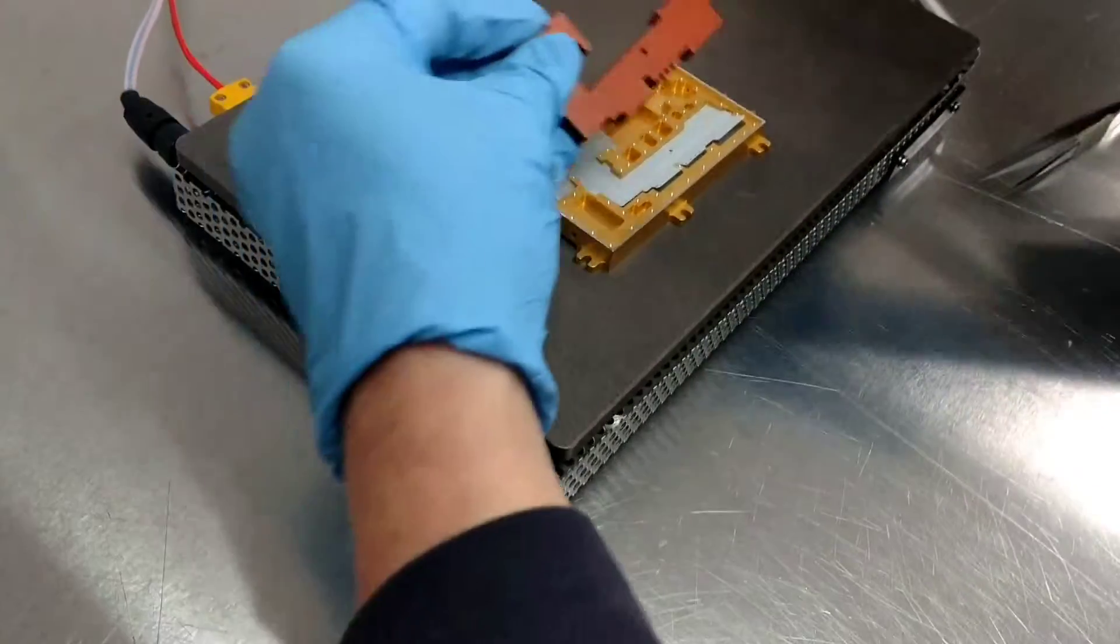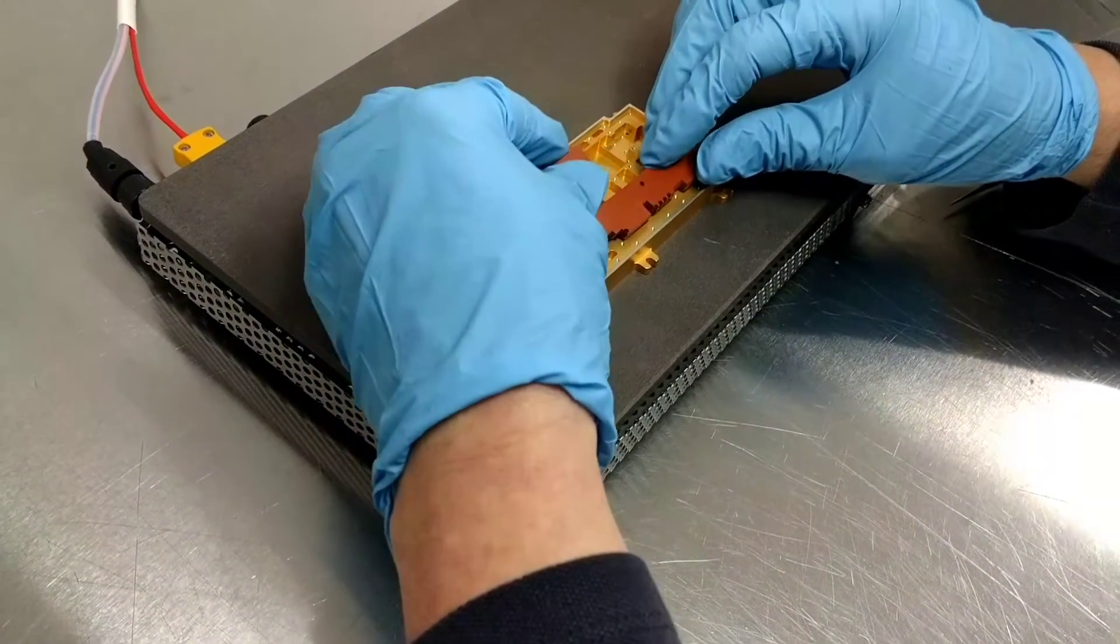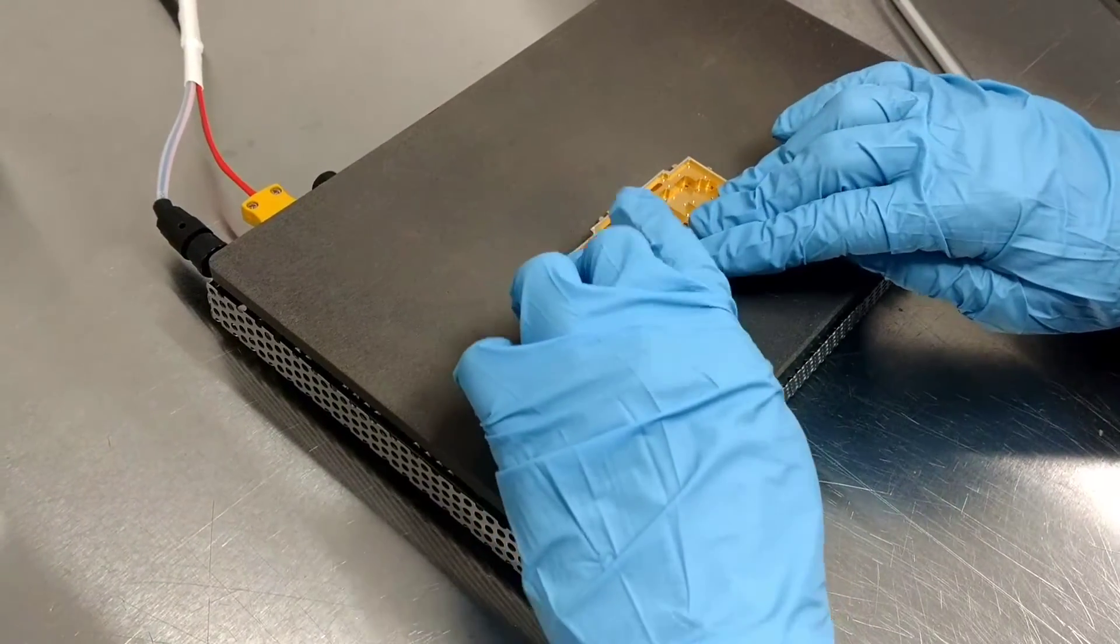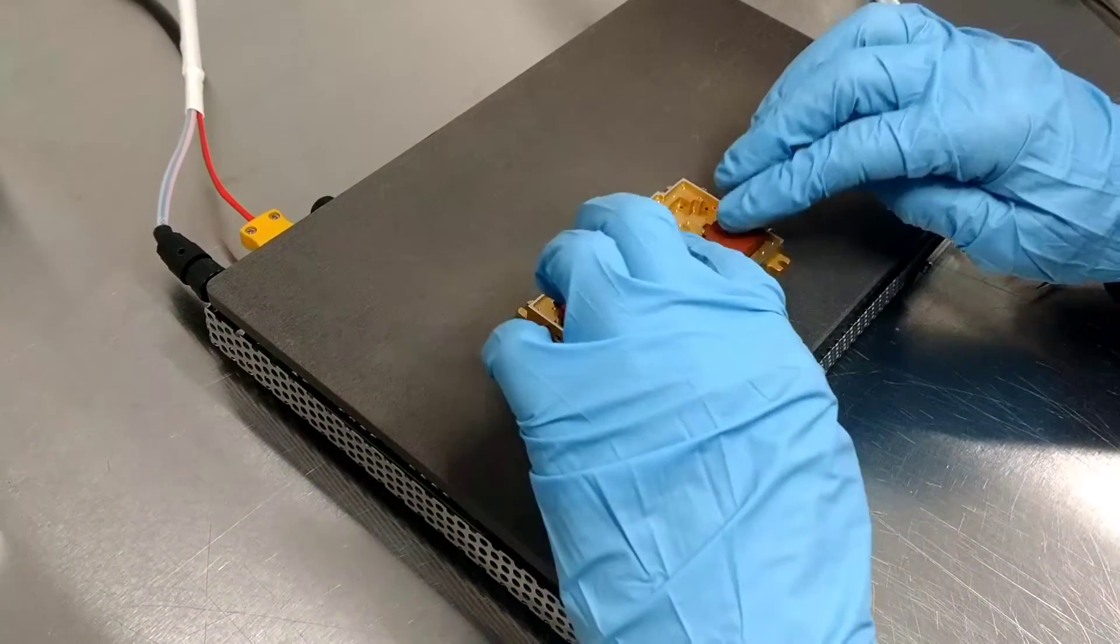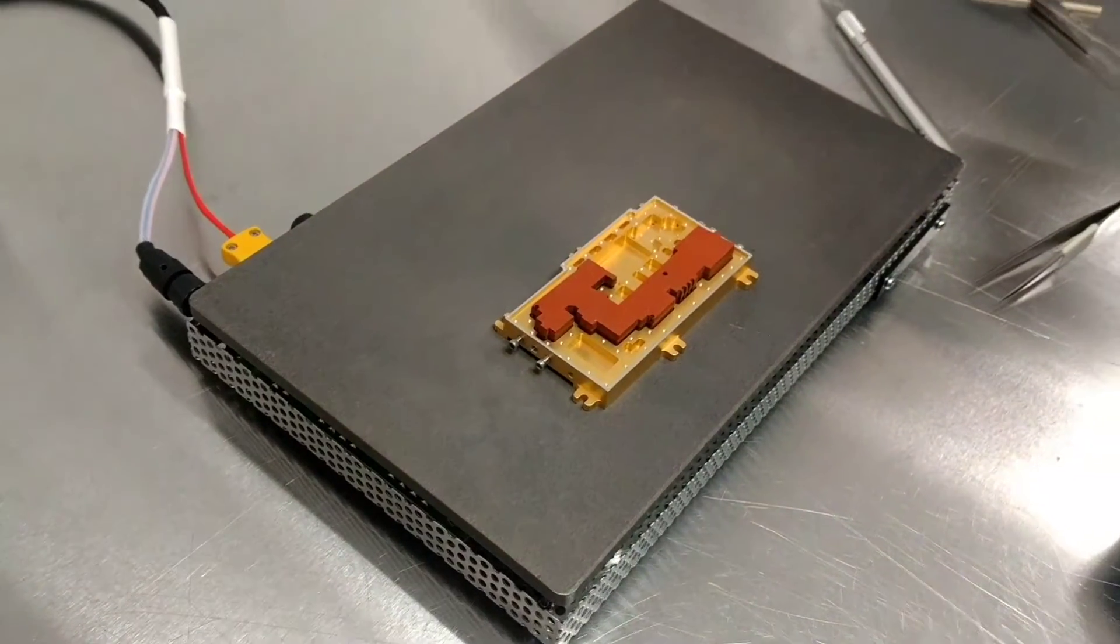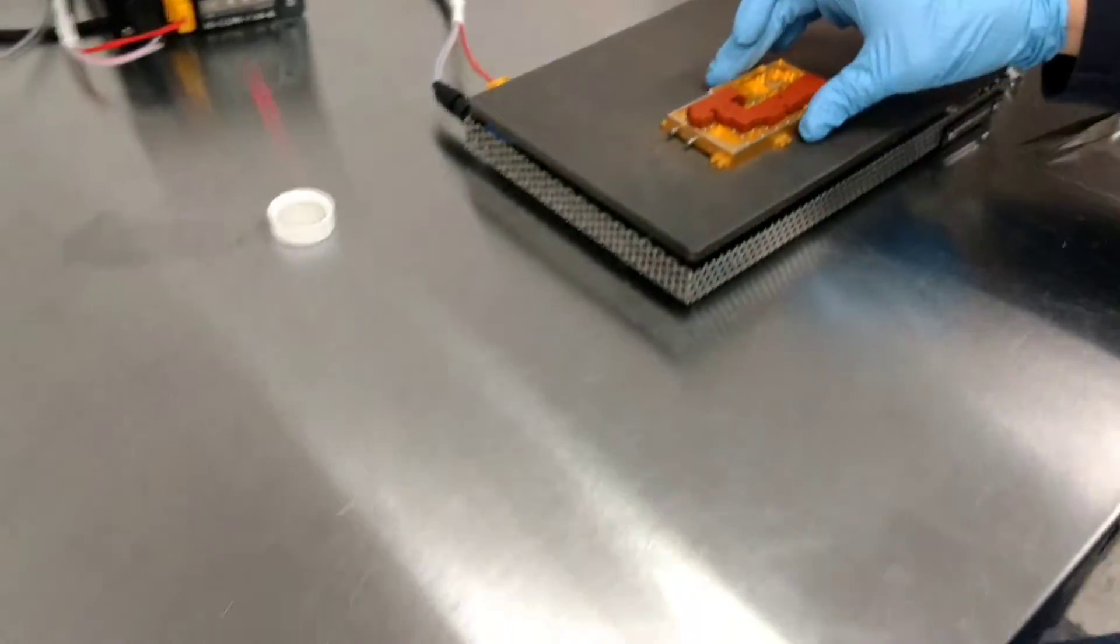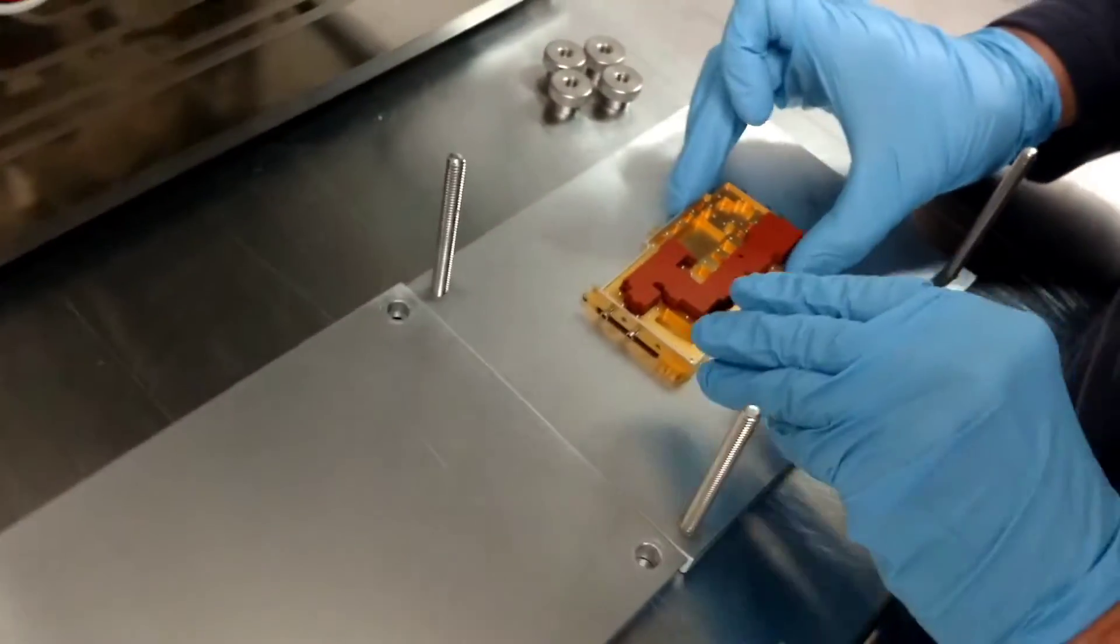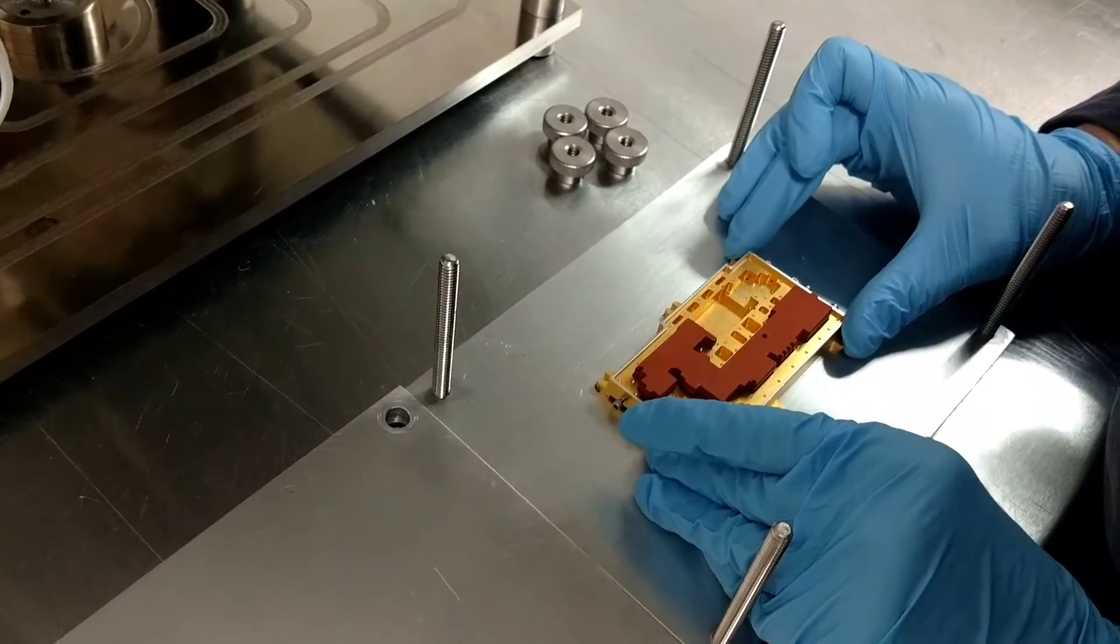And now we'll also put on the press board. Press that down to make sure it's tacked in place. Then we'll remove that from the hot plate. And we'll put that into the holding fixture. We'll make sure that it's centered.